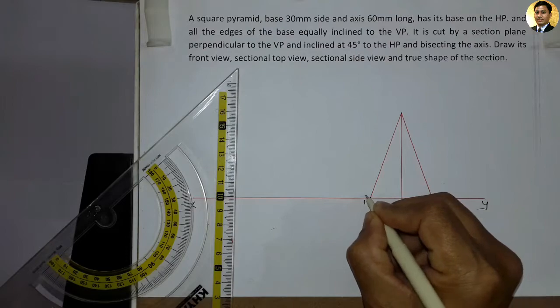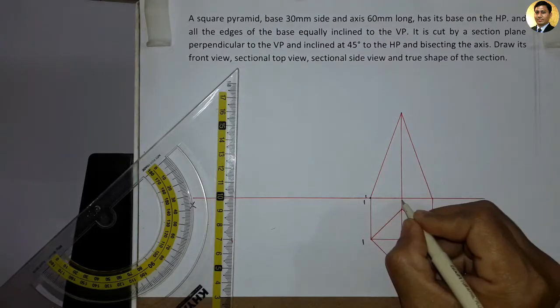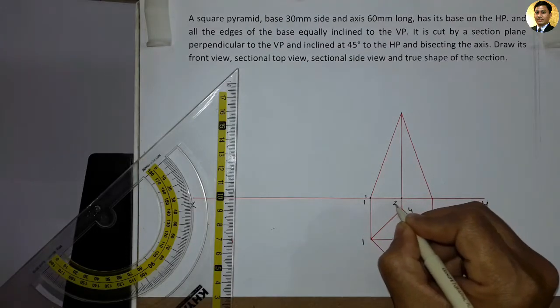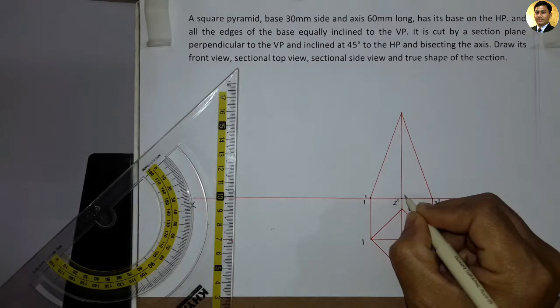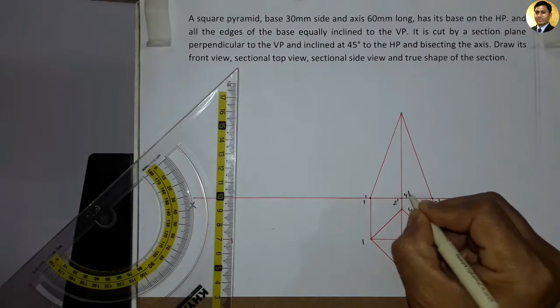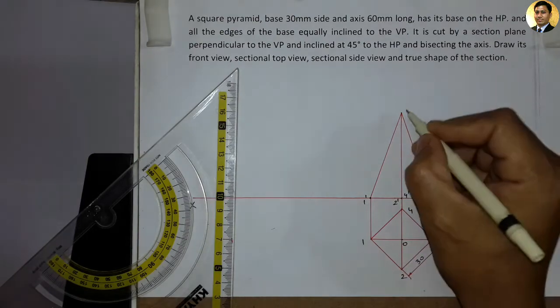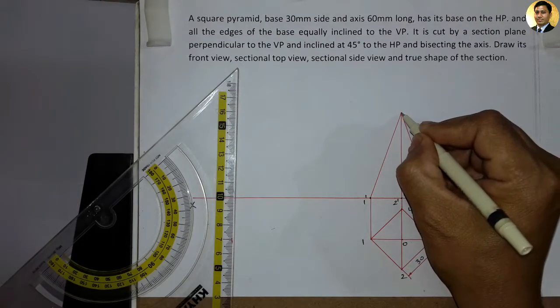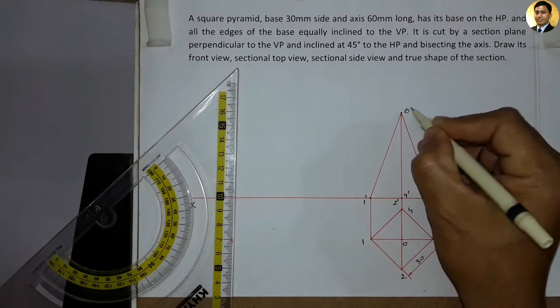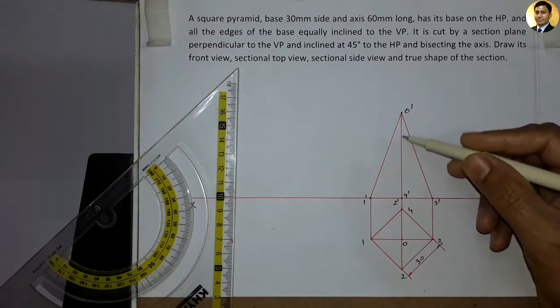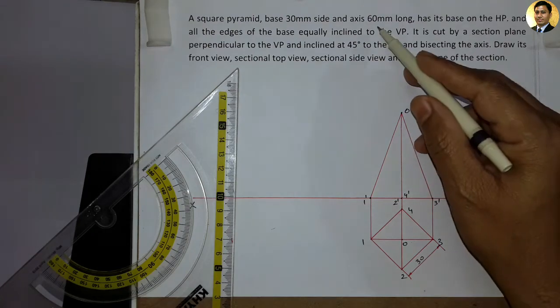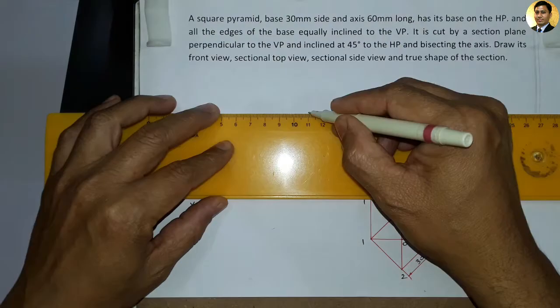We mark points 1, 2, 3, and 4 for the base corners. This pyramid's axis height is 60 mm, which we mark in the front view.